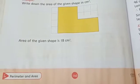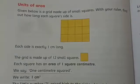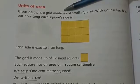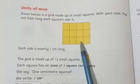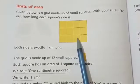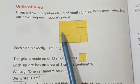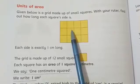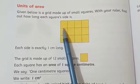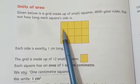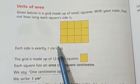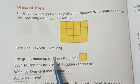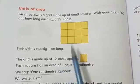Open your books page number 140. Units of area. Given below is a grid. This is a grid made up of small squares. You have to find out how long each square side is. Each square side is exactly 1 cm long. And the grid is made up of 12 small squares.